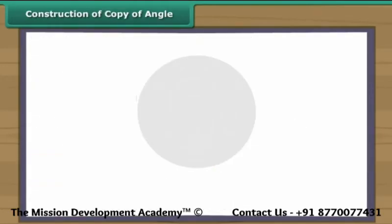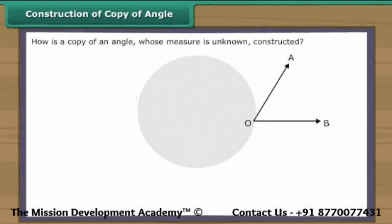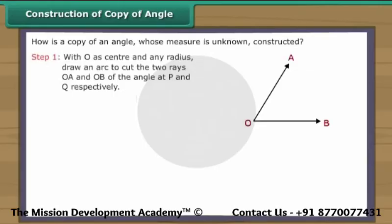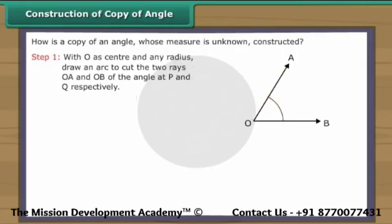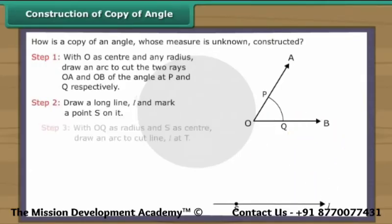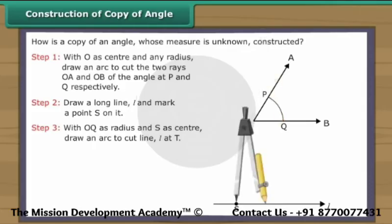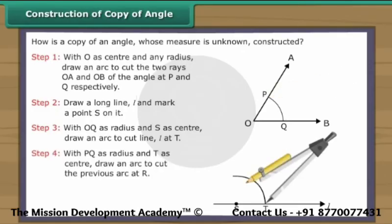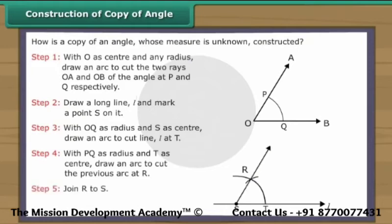Construction of copy of angle. How do we construct a copy of an angle whose measure is unknown? Angle AOB is given. With O as center and any radius, draw an arc to cut the two rays OA and OB at P and Q respectively. Draw a long line L and mark a point S on it. With OQ as radius and S as center, draw an arc to cut line L at T. With PQ as radius and T as center, draw an arc to cut the previous arc at R. Join R to S. Angle RST is equal to angle AOB.